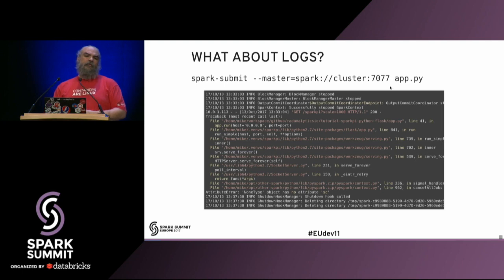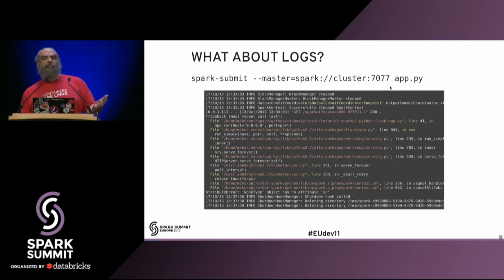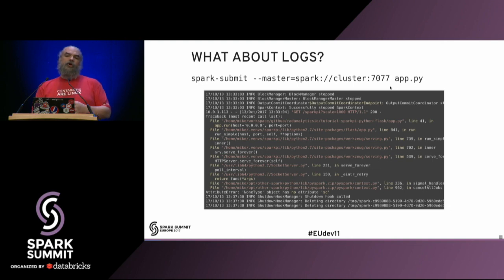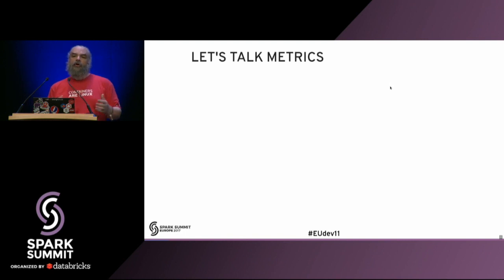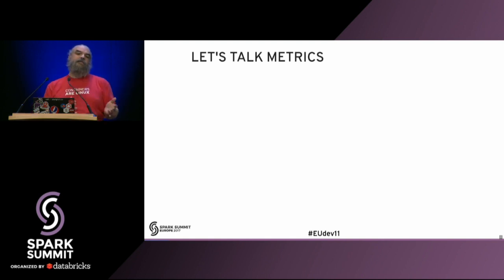Where most of us start is with the logs. You can see a Spark submit command running some Python application with an exception trace. This is an easy way to see when an application blows up, but you just see these logs when looking at the standard output. What we want to do is go deeper and look at the metrics coming from Spark.